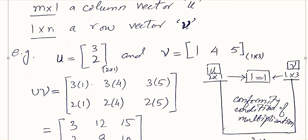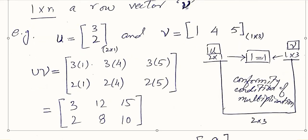These are two matrices which are specifically vectors. This is a column vector and this is a row vector. You can see there are two rows and only one column, and here there is only one row and three columns. The order is written in the subscript for clarity. Now if we want to multiply these, we have to check the conformity condition. We write the order of the two matrices: u is 2×1 and v is 1×3.